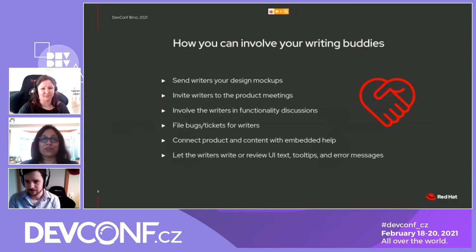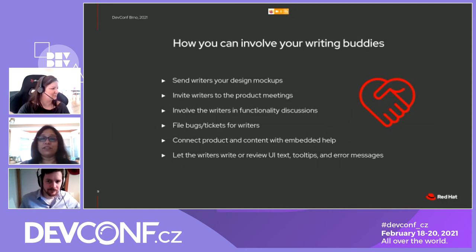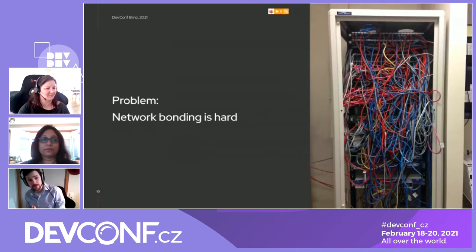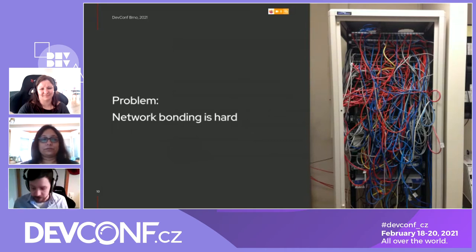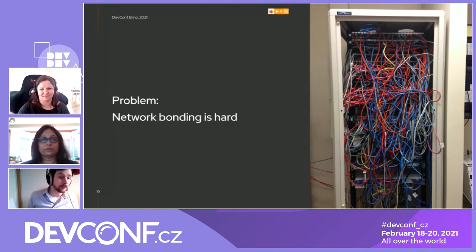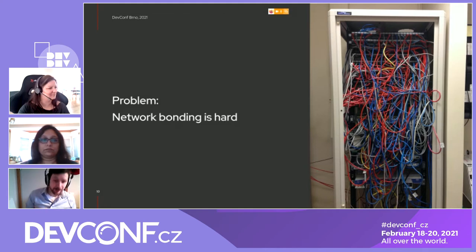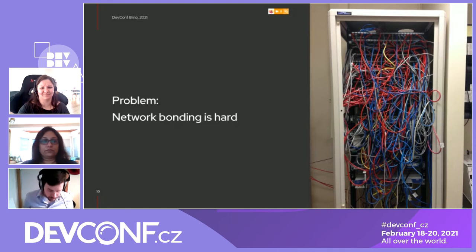If you haven't started collaborating with your writers, I encourage you to start now. Now, back to Andreas to talk about some work we've done together. We're going to talk about how we work together in practice as UX designers and technical writers. The first example is the UI for network bonding. Network bonding is hard — it's a way to bring together several network interfaces to handle network load or act as backup in case of hardware failure. We wanted to create something simple and straightforward for our UI, and here is version one.